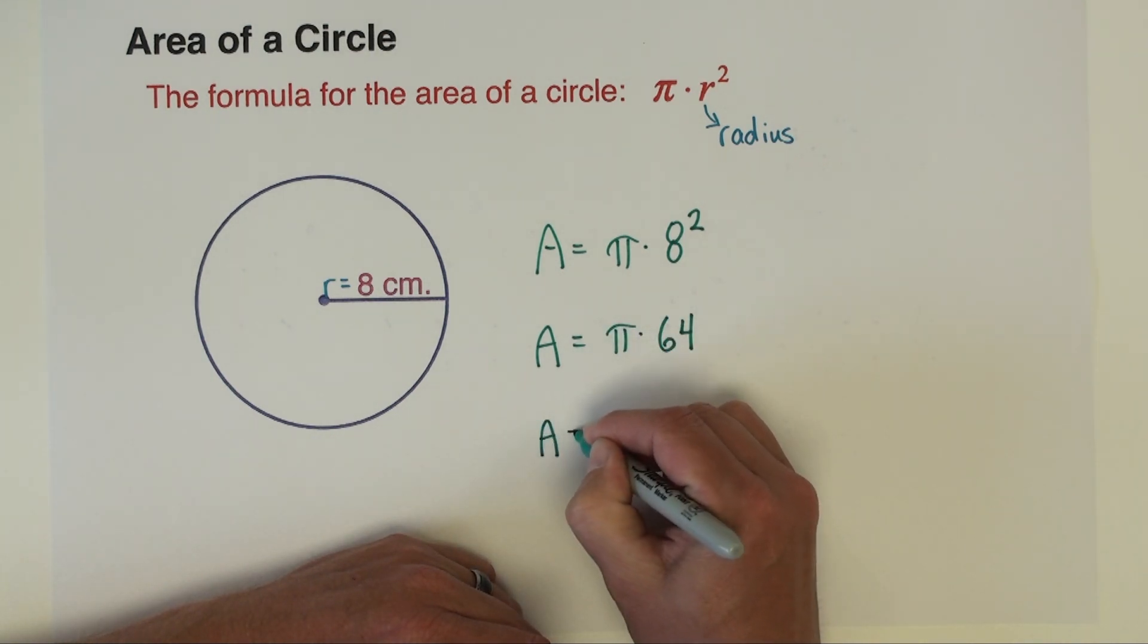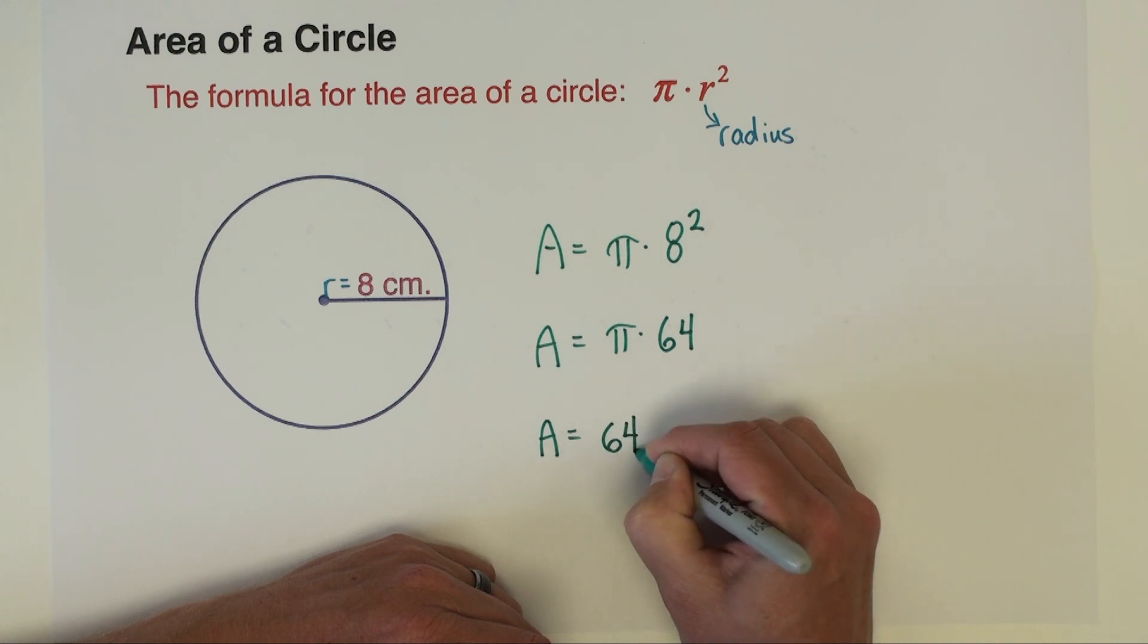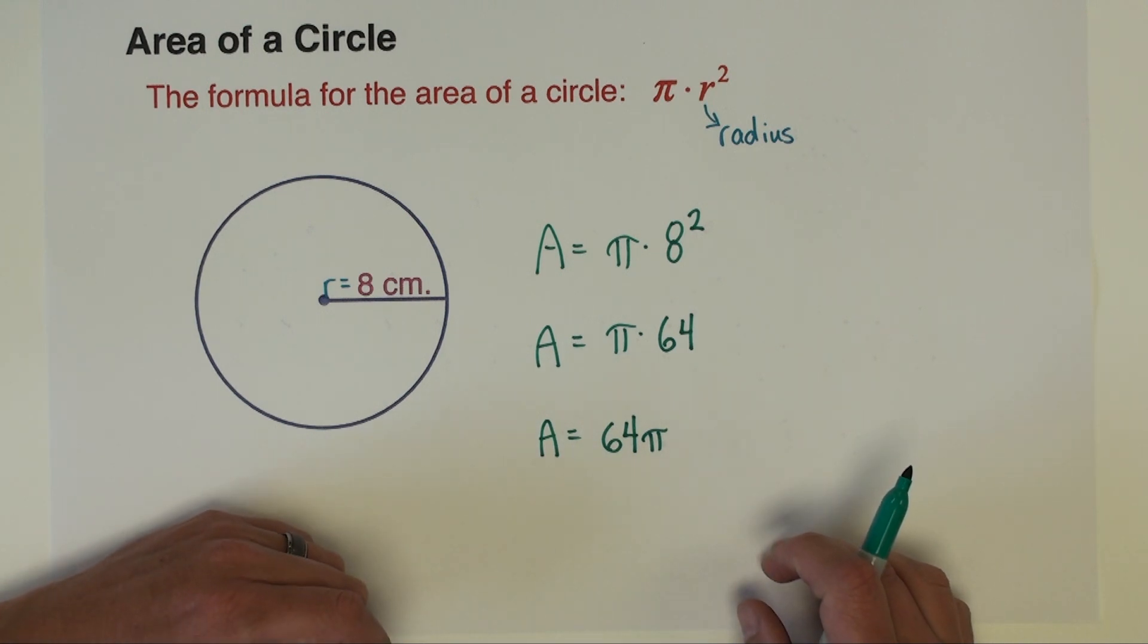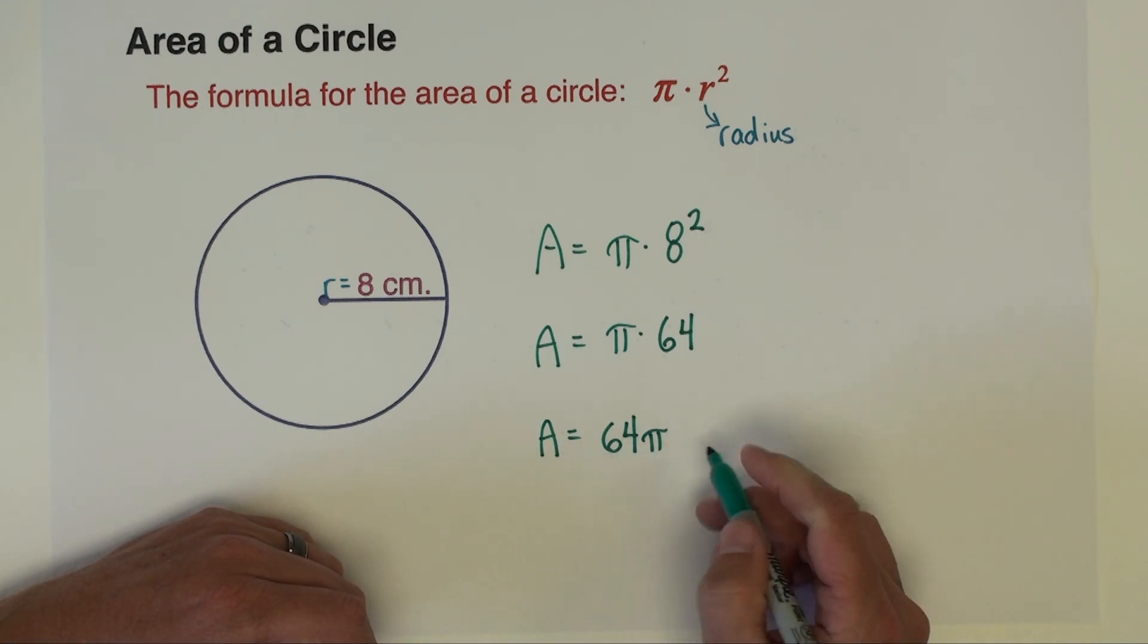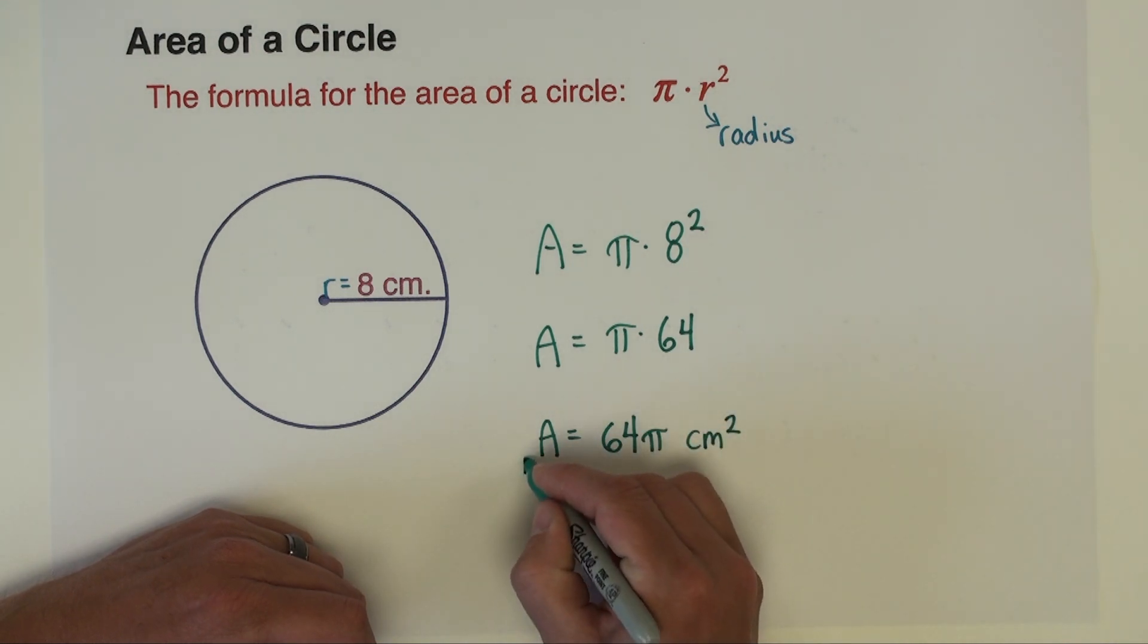We're going to say our area is 64 pi. Typically you're going to put the whole number in front of pi, so that is going to be our exact area. That's 64 pi centimeters squared.